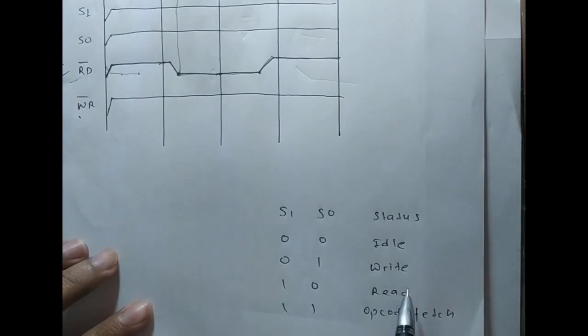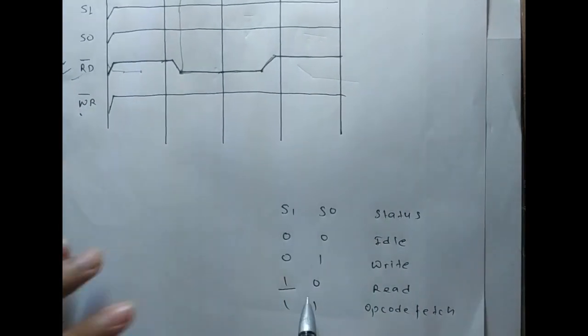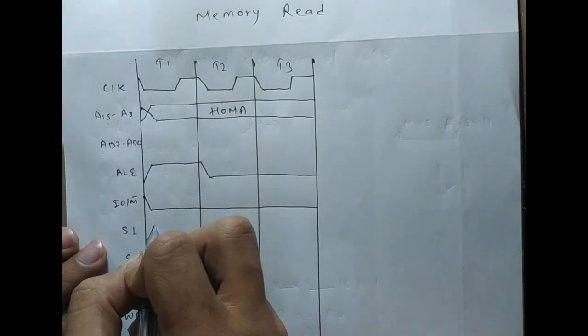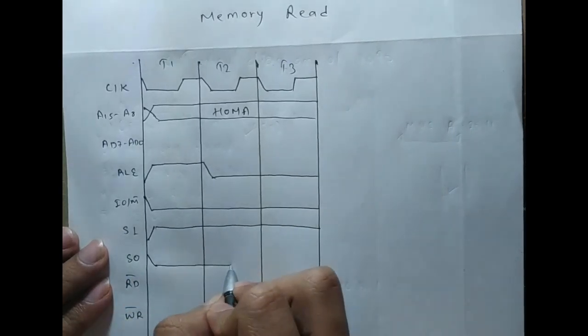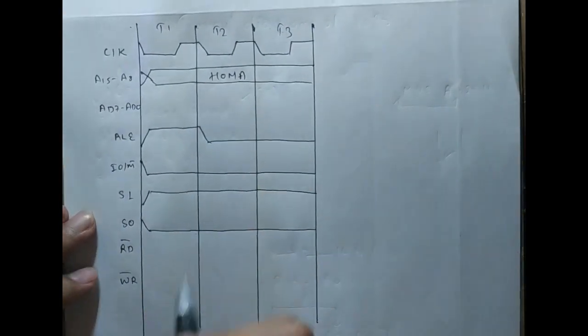For the memory read we have to make S1 high and S0 low.